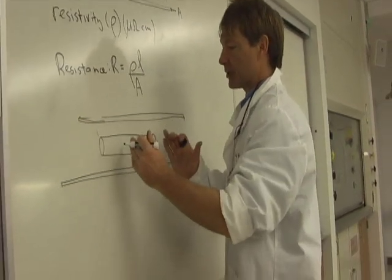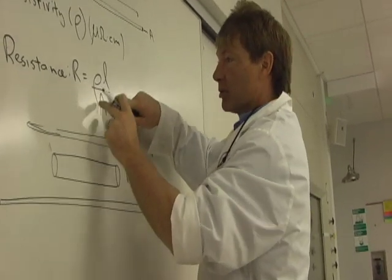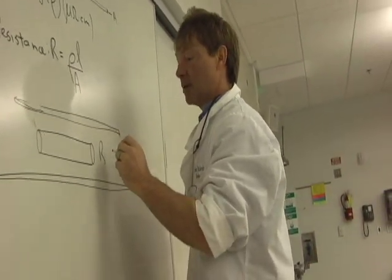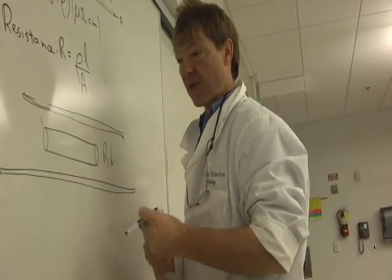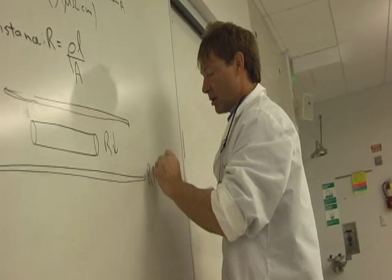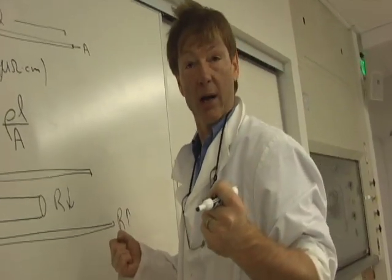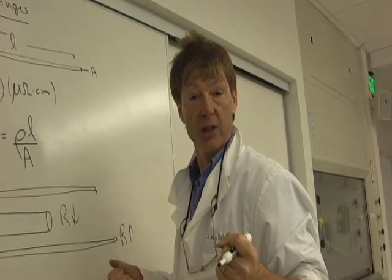So if I compress it, the area will go up, the length will go down. That means the resistance drops in the wire. If I stretch it, the length goes up, the area goes down, the resistance increases. So a change in the shape of the wire produces a change in the resistance.